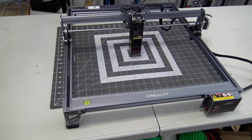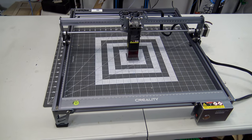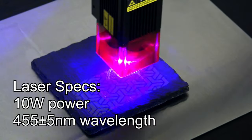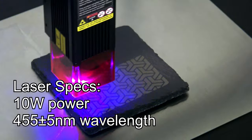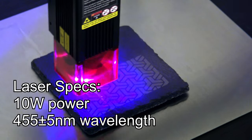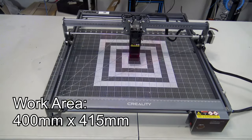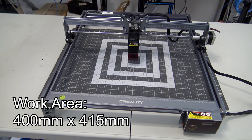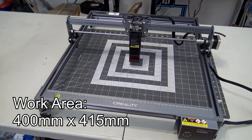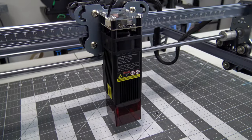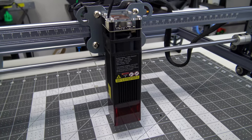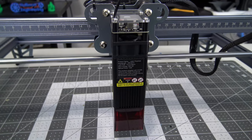The CR Laser Falcon is a 10W blue laser diode engraver and cutter. It uses a 455nm blue laser which is suitable for a variety of materials. It is a benchtop engraver with a working area of 400mm x 415mm. The laser module houses two laser diodes which are combined with lenses to form the final 10W beam.